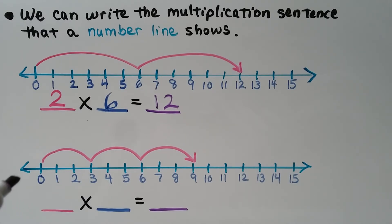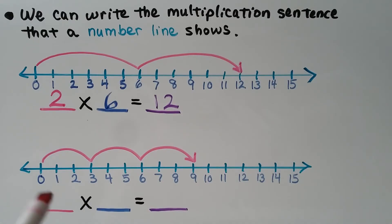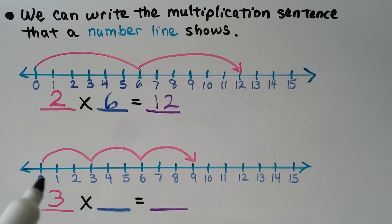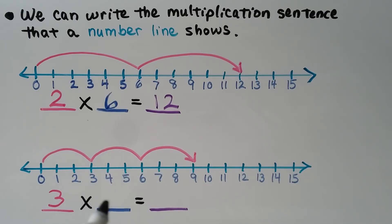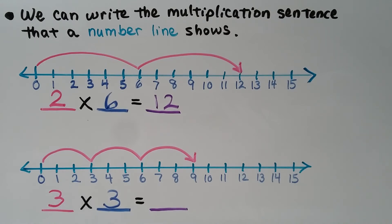Now let's look at this number line. There are three equal jumps, so we're going to put a three there — that's three equal groups. We look for our blue number: how many did we jump? One, two, three in each jump — equal jumps of three. We look to see where the last jump landed. It landed on nine, so we know our product is nine. This number line shows three times three is equal to nine.